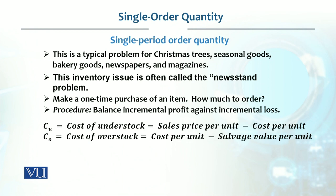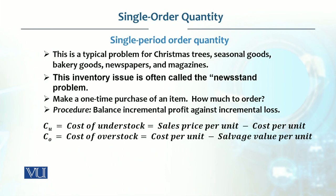Cost of understock (Cu) equals the sales price per unit minus the cost price — the difference is your profit margin, which becomes your cost of understock, because if you lose a sale when your stock runs out, that is the amount you are losing. Cost of overstock (Co) is the purchase cost of the unit minus any salvage value — whatever remains is your out-of-pocket loss.